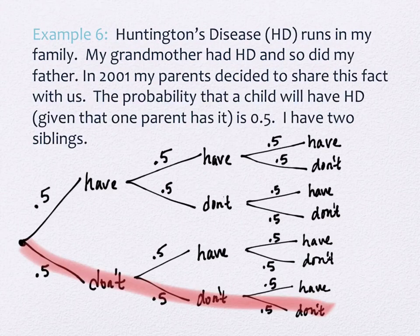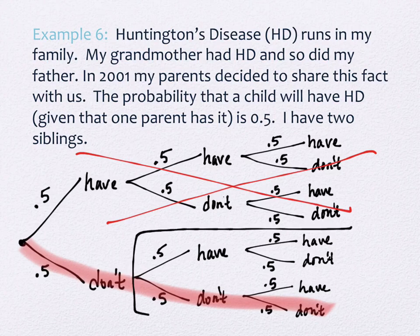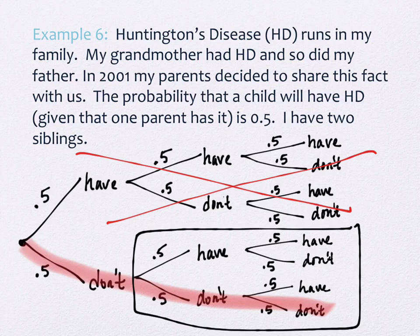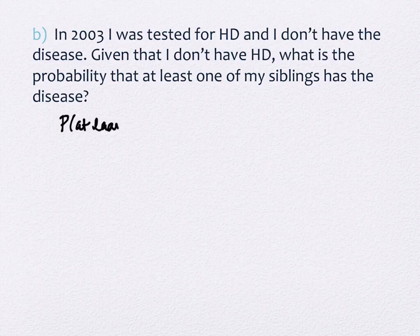Given the fact that I don't have Huntington's disease, what is the probability that at least one of my siblings does? If you look back at the tree diagram, my negative test result eliminates the top half of the diagram — that possibility is gone. This means we're now working with just the bottom half: the 50/50 shot that my sister has it, followed by the 50/50 shot that my brother does.